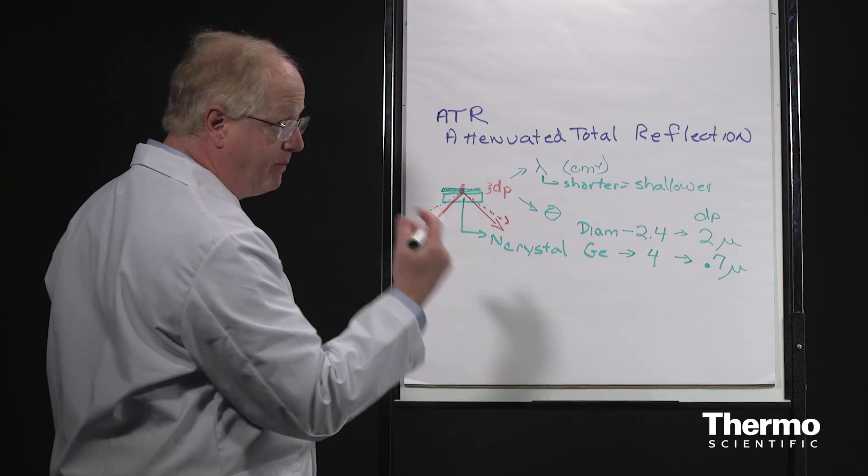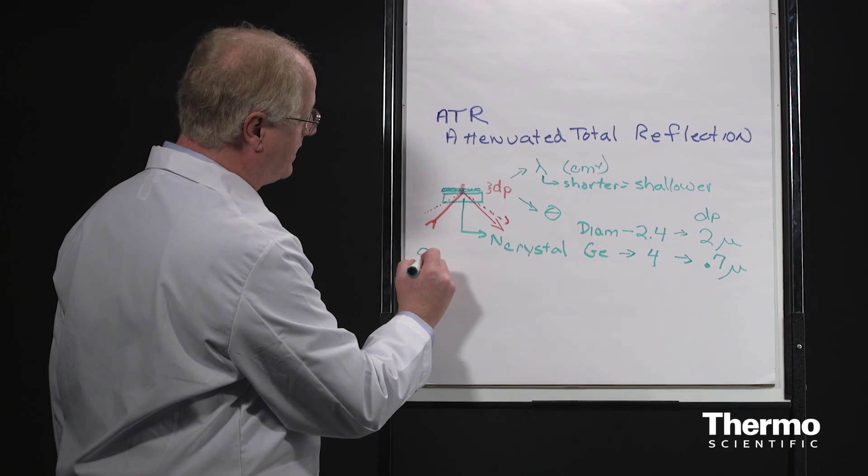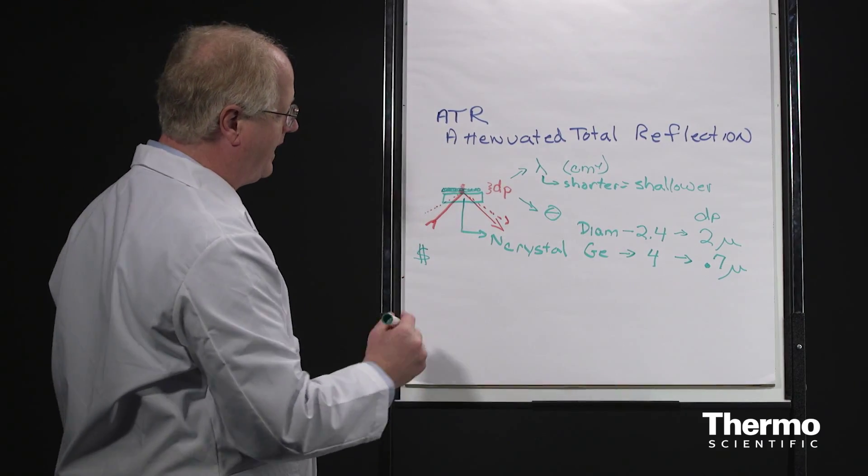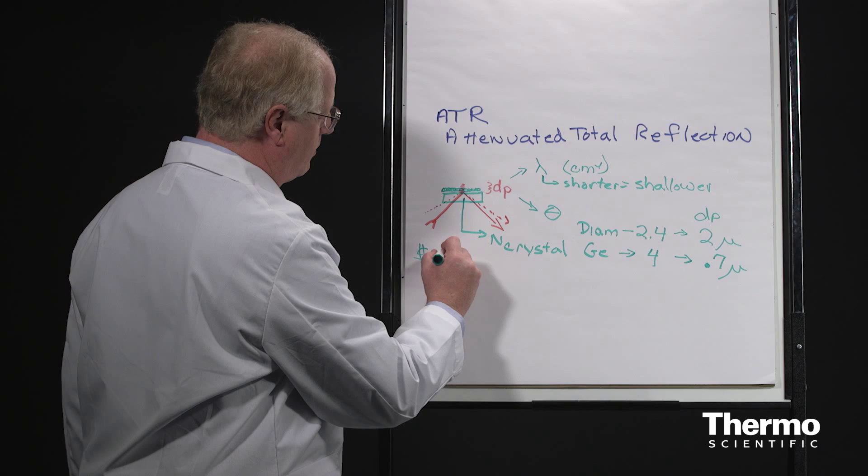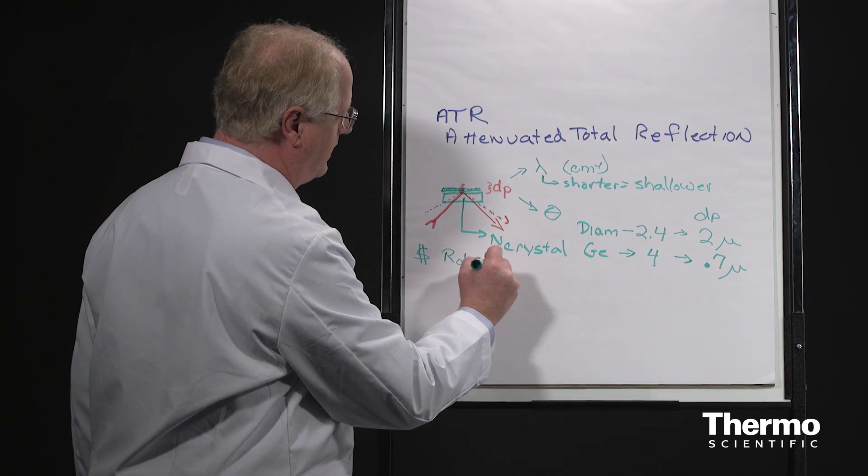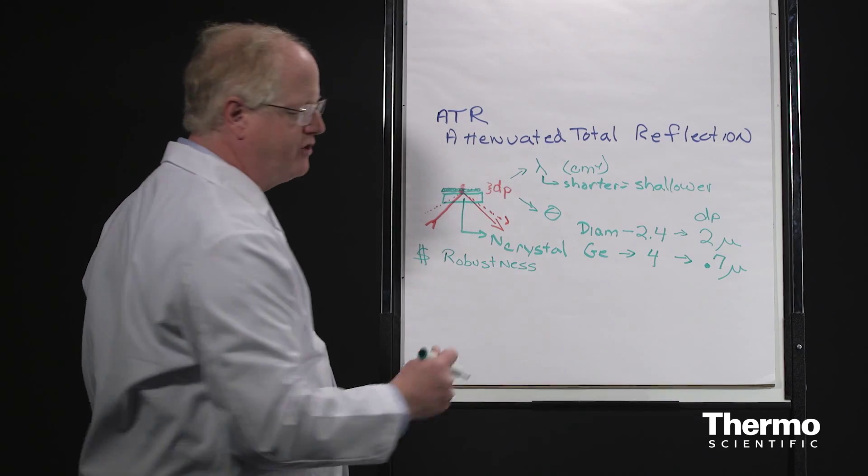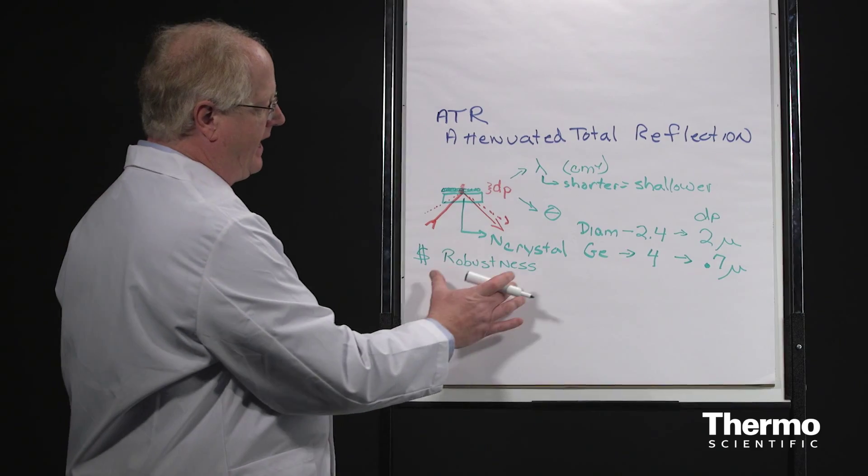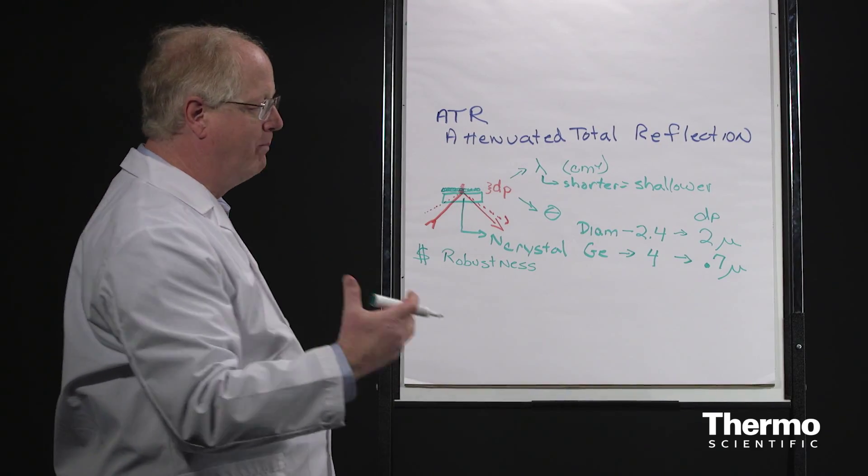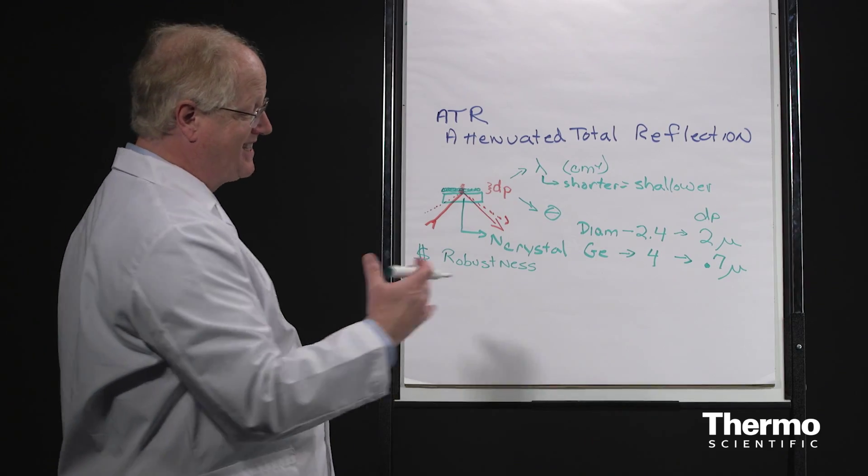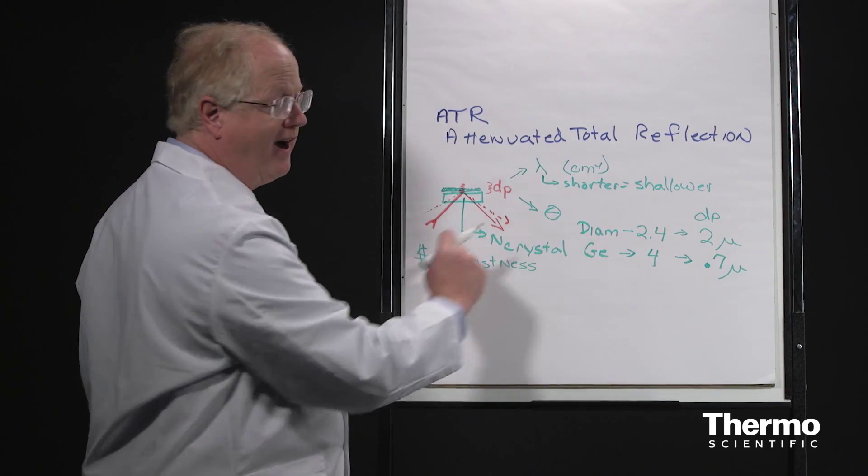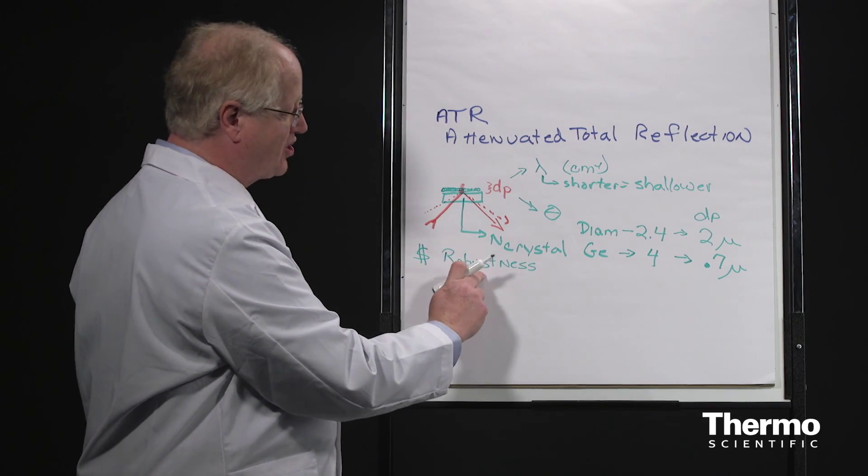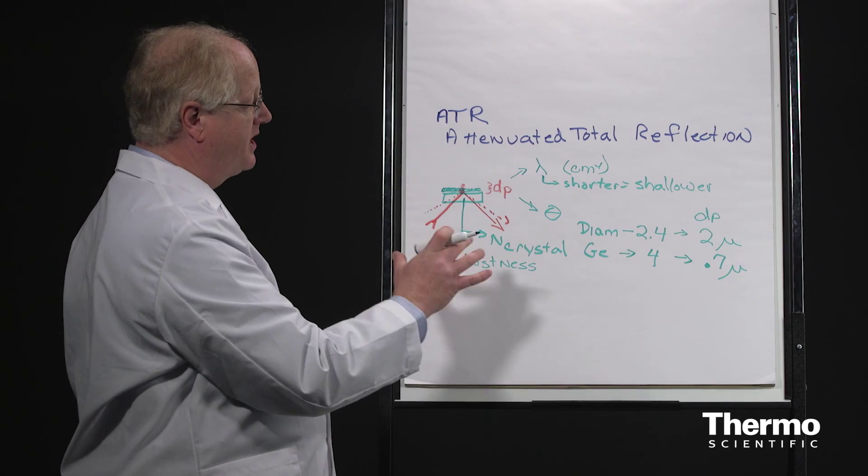The other things that matter are the price - the price of a diamond crystal is going to be higher than that for germanium - and the robustness of that crystal, how it holds up to acid or abrasion or cleaning or use. The diamond is generally a more robust crystal than germanium. And zinc selenide, which has very similar optical properties to diamond, is much less expensive but much softer, so it's less robust.